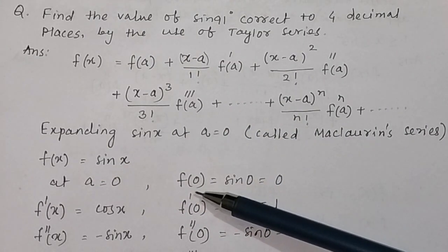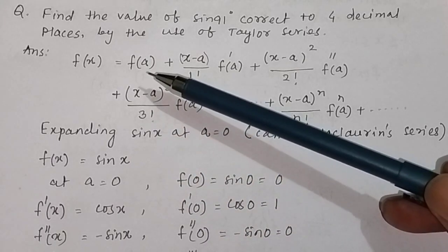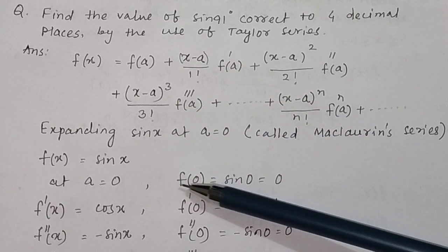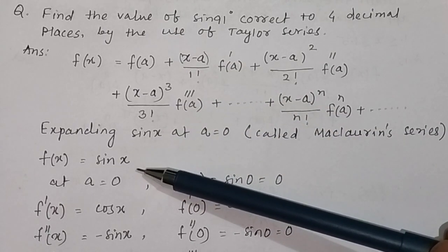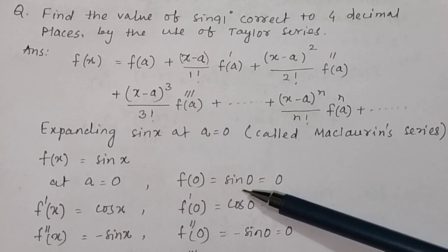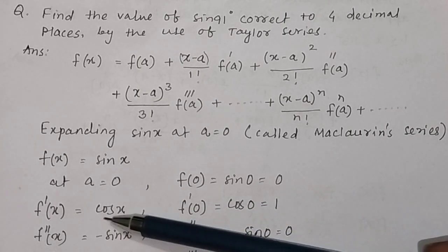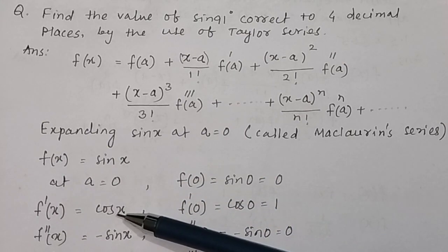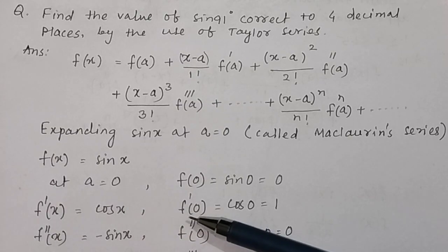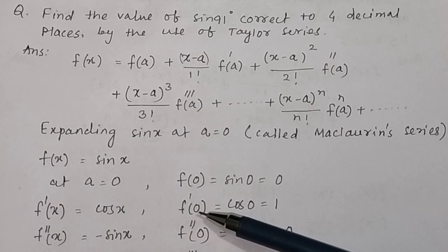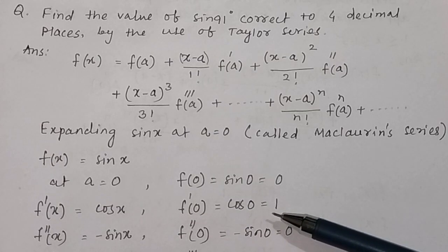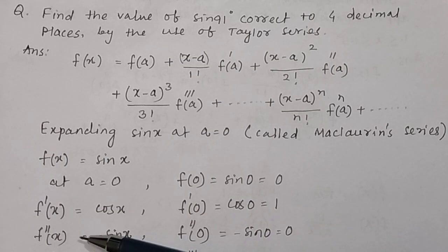We first find f(0), then f'(0). f(0) equals sin 0, which is equal to 0. Then taking the first derivative of sin x gives cos x, so the first derivative at x equal to 0 is f'(0) equal to cos 0, which is equal to 1.